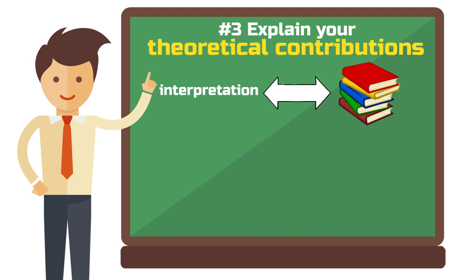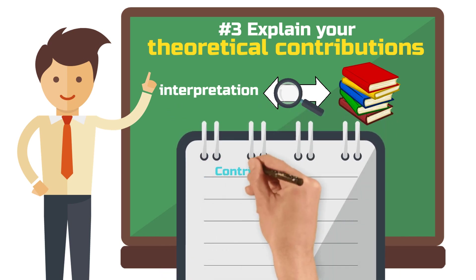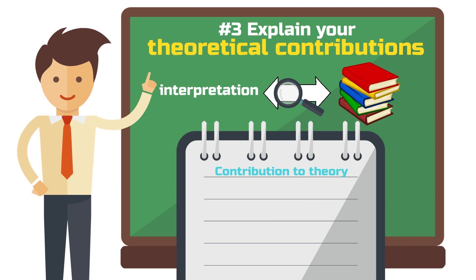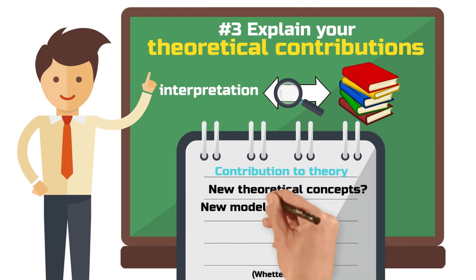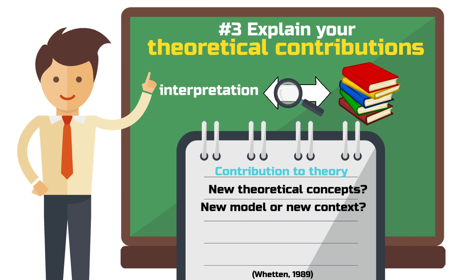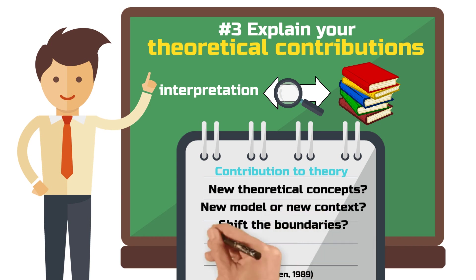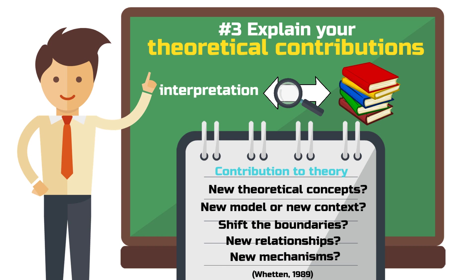The simplest approach is to compare your background chapter with your results and write down how both relate to each other. Consider the question: what do my results contribute to theory? Have a look at the paper by management scientist Albert Wetten, which defines what can constitute a theoretical contribution. Did you introduce new theoretical concepts? A new model? Did you transfer an existing theory to a new context? Did you shift the boundaries of an existing theory, test new theoretical relationships, or discover a new theoretical mechanism? Read Wetten's paper if you have no idea about the things just mentioned.